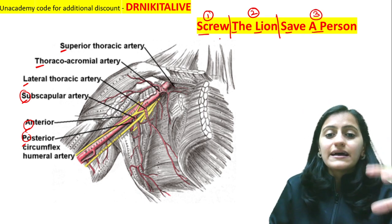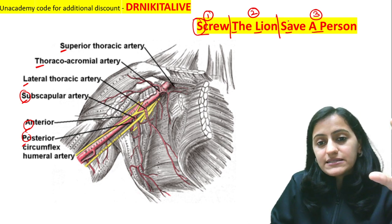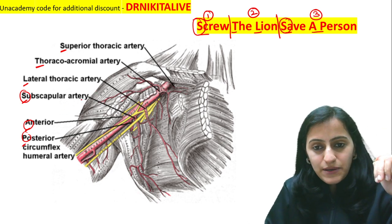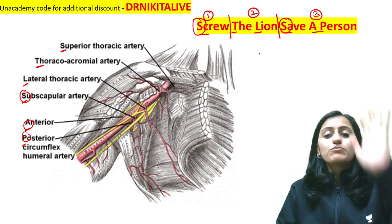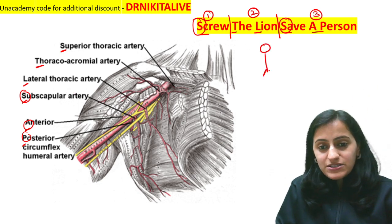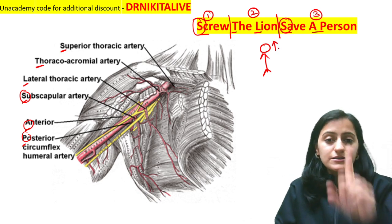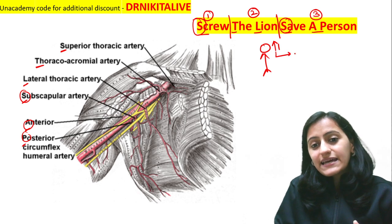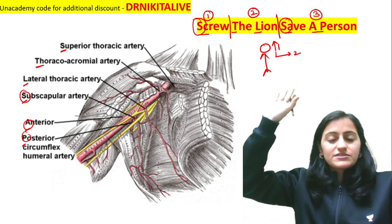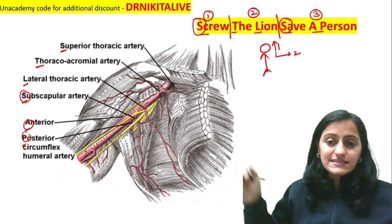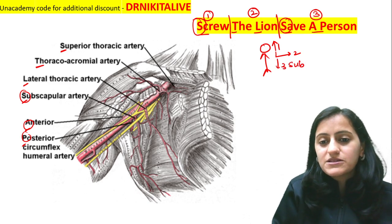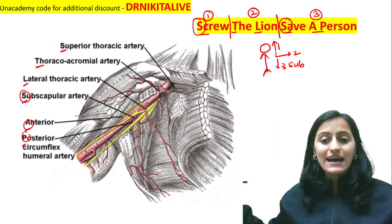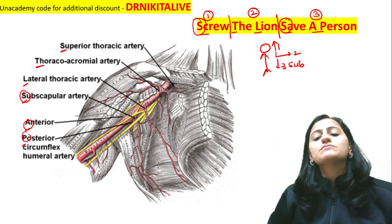You can also remember that the first S is superior thoracic and the last S is subscapular — there might be confusion between the two. Remember we go from top: the first is superior thoracic (first part), then lateral thoracic (second part), and then below is the subscapular. So: superior thoracic, lateral thoracic, and subscapular.